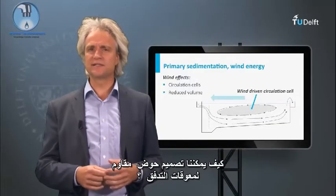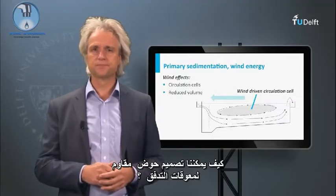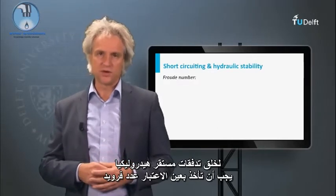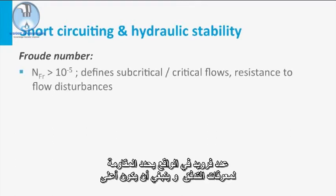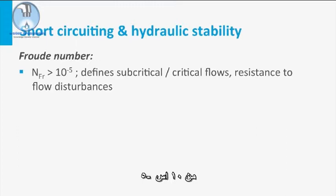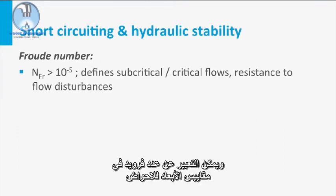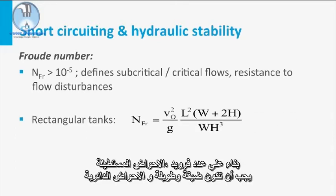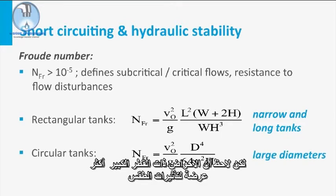How can we design a tank that is resistant to flow disturbances? For creating hydraulically stable flows, we have to take the Froude number into consideration. The Froude number defines the resistance to flow disturbances and should be higher than 10 to the power of minus 5. The Froude number can be expressed in the dimensional measures of either a rectangular tank or a circular tank. Based on the required Froude number, rectangular tanks should be narrow and long, and circular tanks should have a large diameter. Note that large diameter tanks are more susceptible to weather influences.